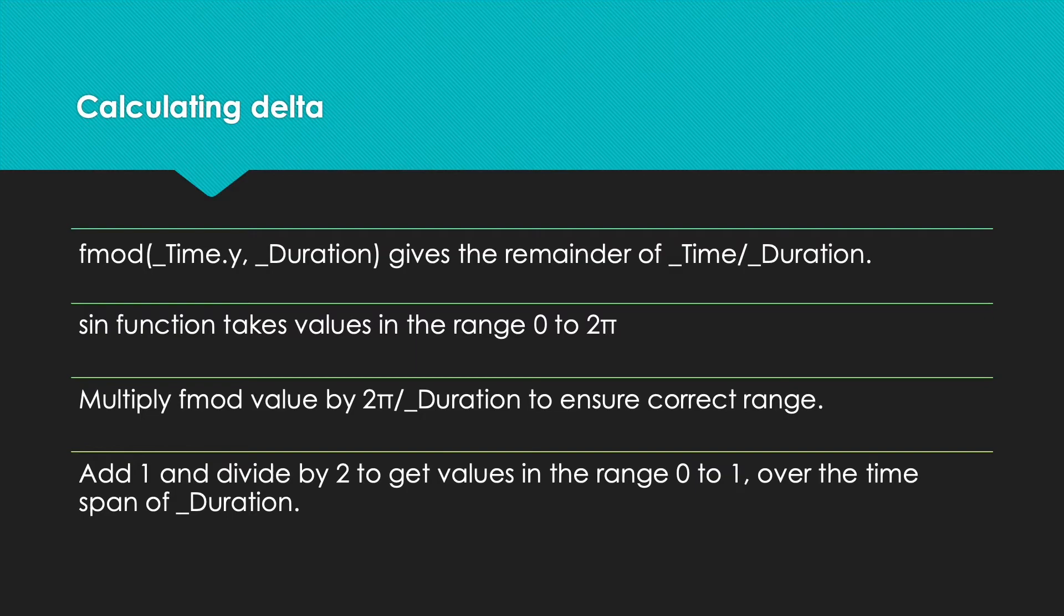The sine function returns values between -1 and 1. We add 1 to this and divide by 2 to move to 0 to 1 as the possible values. We've done this a lot in this course, so we get a value that varies between 0 and 1 over a time span of duration.